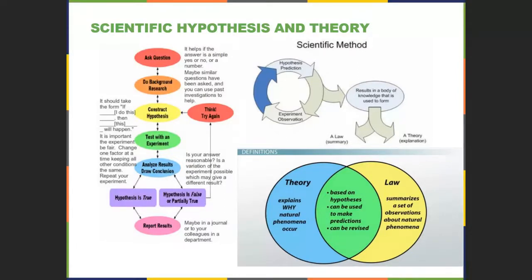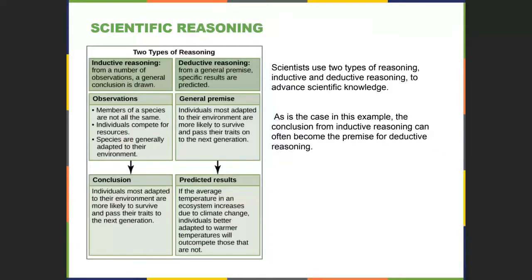There are two types of reasoning. Inductive reasoning involves making different observations and coming to a general conclusion. Deductive reasoning involves looking at a premise and making predictions about how things might go from that idea. Science uses both of these, and it is important to understand how they work.